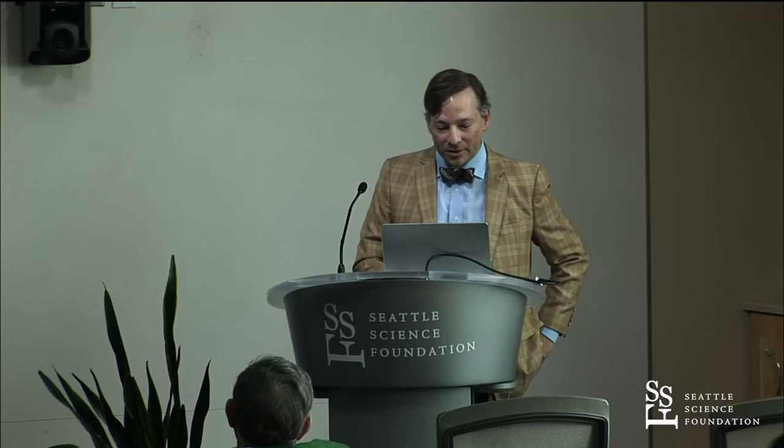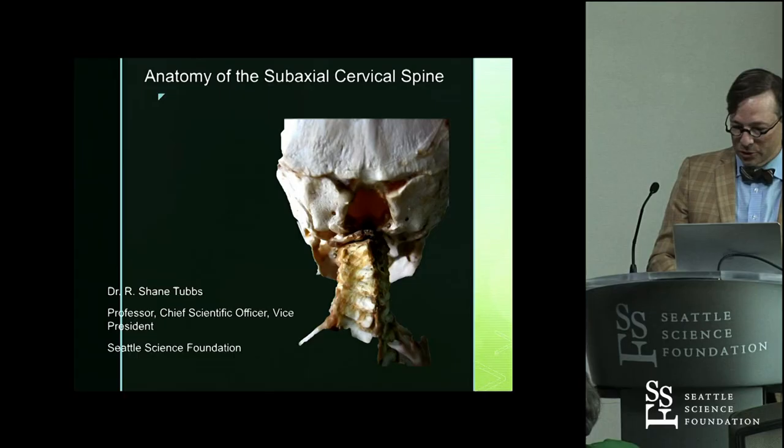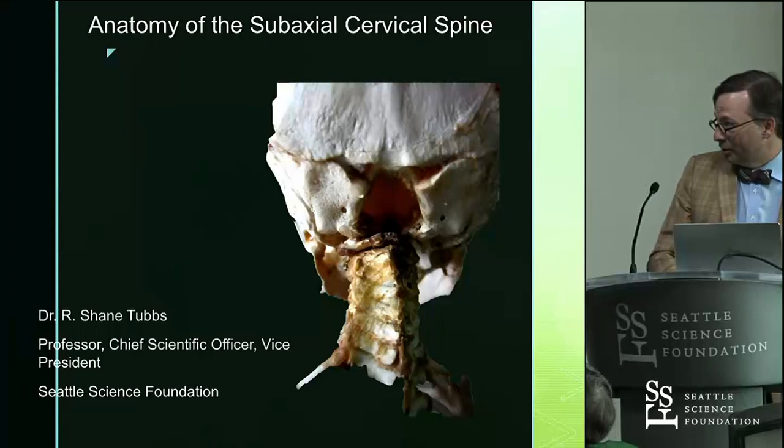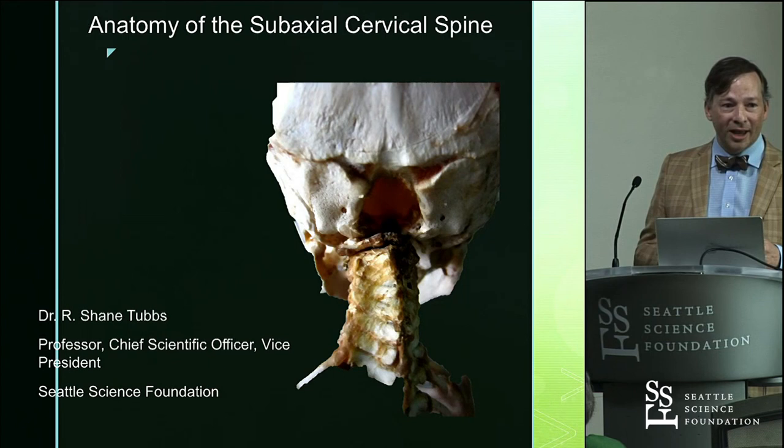Let's look at some of the subaxial spine. Obviously the fetal spine, subaxial spine — a very fragile little area. I love that slide showing the perspective of the amount of surface area that the foramen magnum has compared to the rest of the spine; it almost could engulf the entire thing.